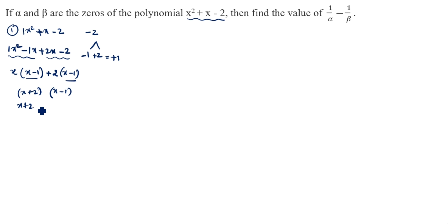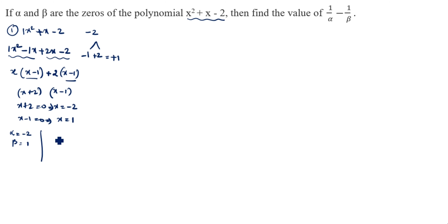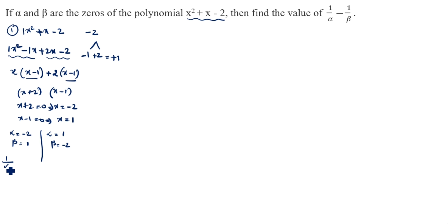So x plus 2 equals 0 gives x equals minus 2, and x minus 1 equals 0 gives x equals 1. We can take alpha equal to minus 2 and beta equal to 1, or alpha equal to 1 and beta equal to minus 2.